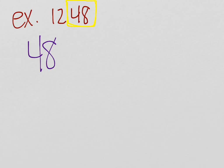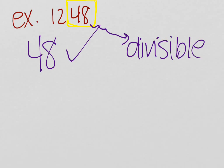So is 48 divisible by 4? Yes, it is. So therefore, 1248 is divisible by 4. Now I hope that helped, and I hope to see you soon.